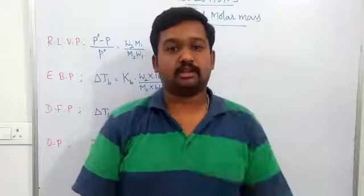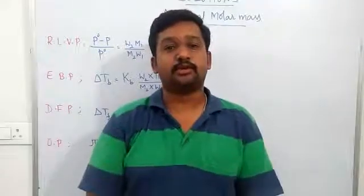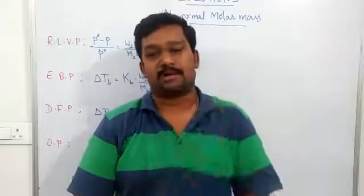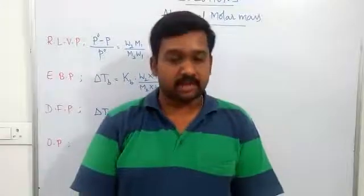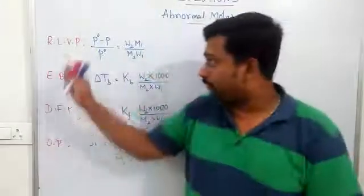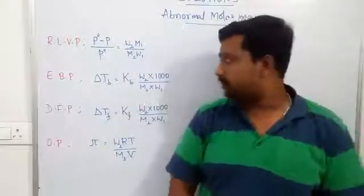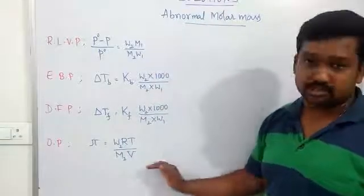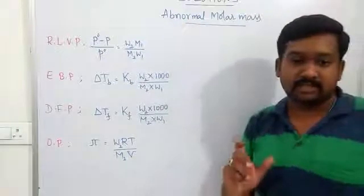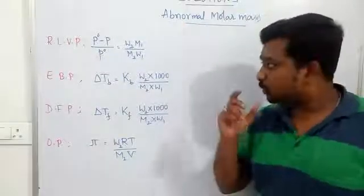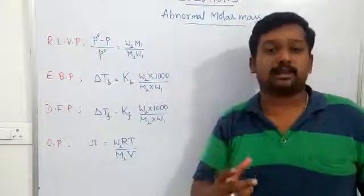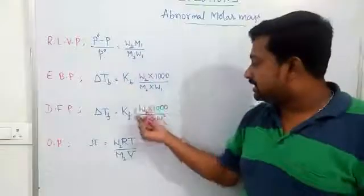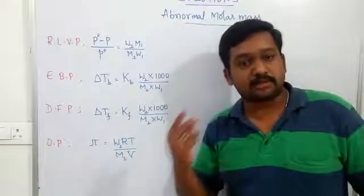Now we will discuss the last concept of this unit, Solutions — the concept of abnormal molar mass. The colligative properties we have seen earlier — relative lowering of vapor pressure, elevation of boiling point, depression of freezing point, and osmotic pressure — in all four cases we have an option to calculate the molar mass or molecular mass of a given solute. M₂ in all these cases represents the molar mass of the solute.